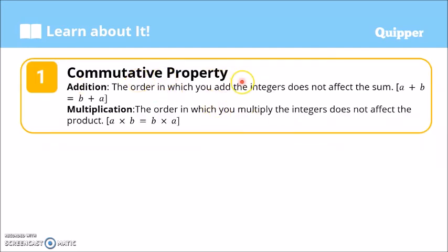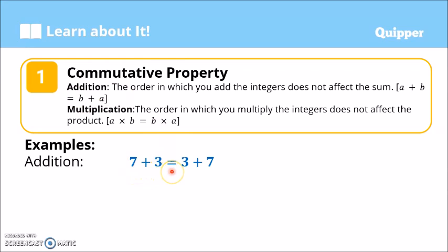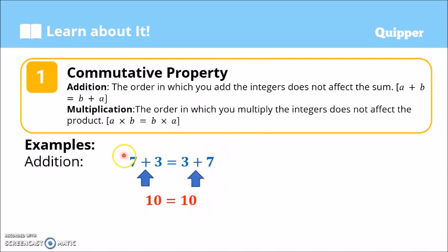The first property is the commutative property. We have commutative property of addition and commutative property of multiplication. In addition, the order in which you add the integers does not affect the sum. So we have a plus b is equal to b plus a — pwedeng balibalikta rin yan. Example: 7 plus 3 is also equal to 3 plus 7. Because 7 plus 3 is 10, and 3 plus 7 is also 10. This is the commutative property of addition.